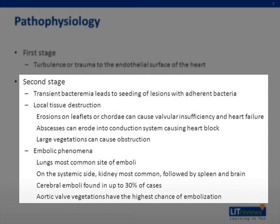Abscesses can also weaken vascular walls leading to aneurysmal formations that have the tendency to rupture. Very large vegetations or growths of bacteria can cause obstruction to blood flow. Embolic phenomenon are a real concern of endocarditis. The lungs are the most common site of emboli due to a majority of endocarditis affecting the right-sided heart structures. When a vegetation is present on the systemic or left ventricular side, the kidney is the most common, followed by the spleen and then the brain. Although the brain is only the third most common site of systemic embolization, cerebral emboli have been found in up to 30% of cases.